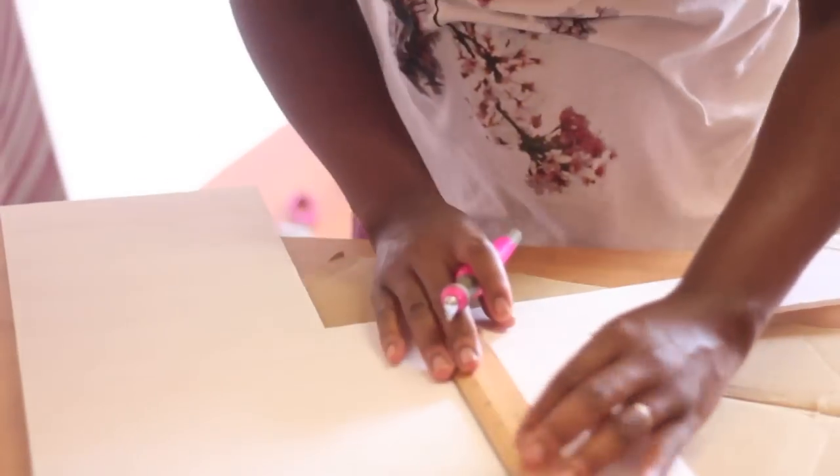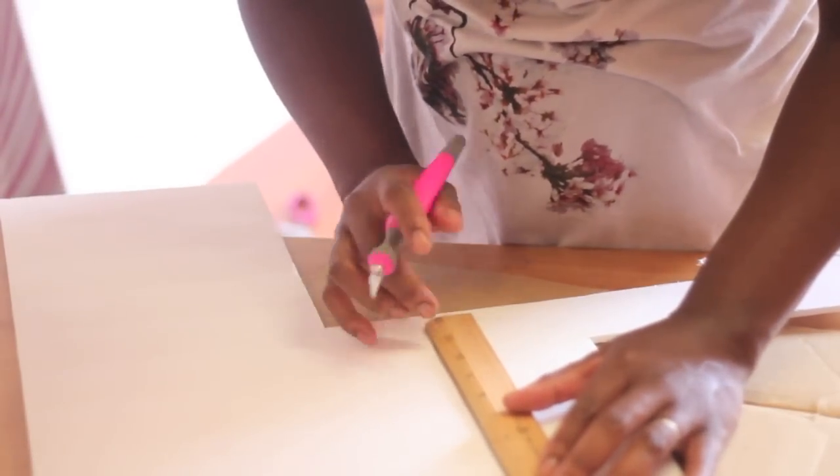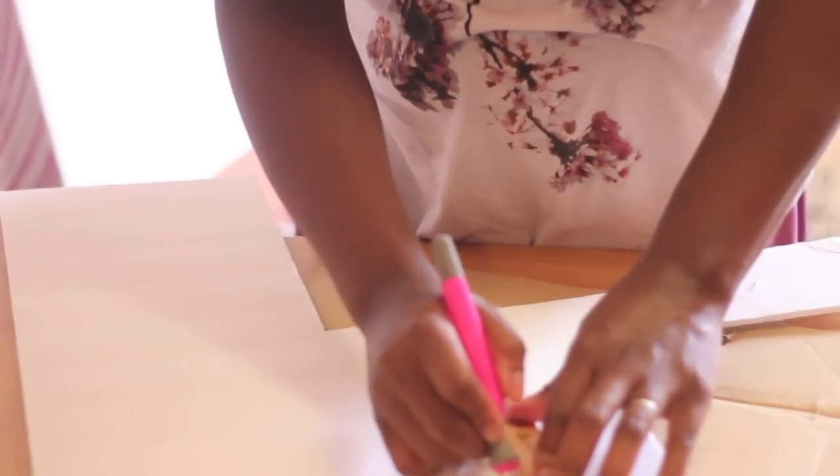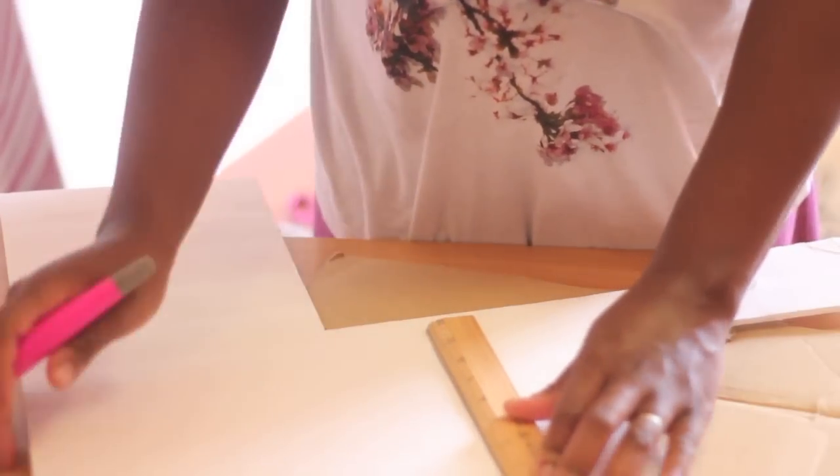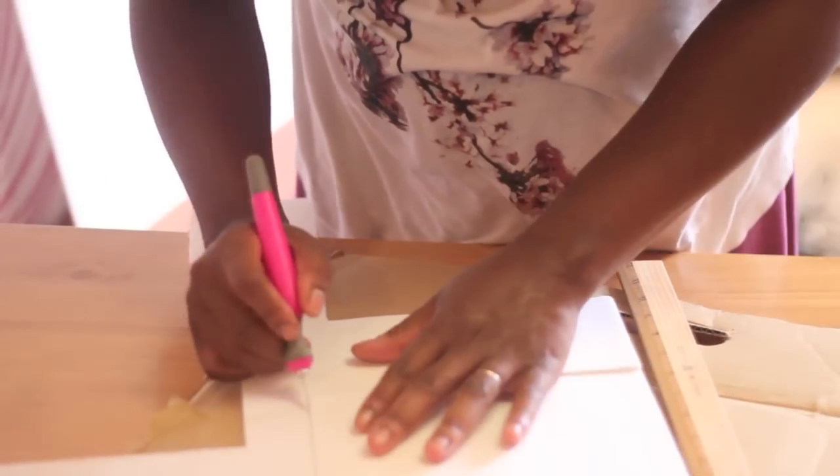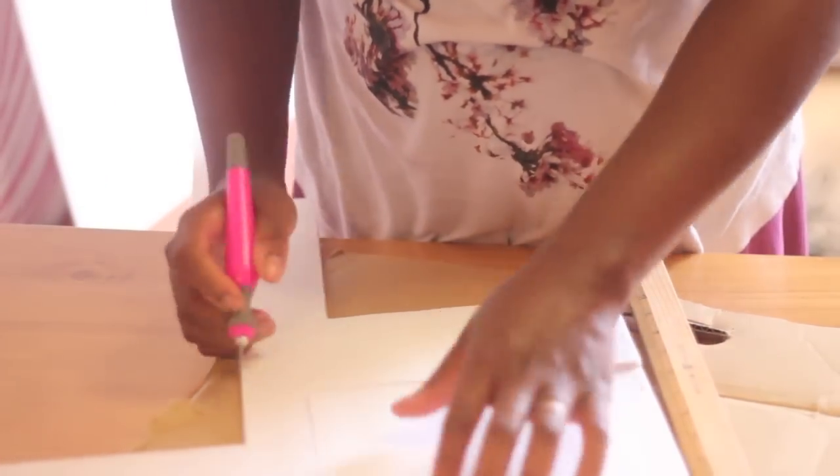Once you have that cutting mat or protective surface out, you're going to take your exacto knife and ruler and cut along the drawn lines. It's worth mentioning that if you are not using a metal ruler, make sure your plastic or wooden ruler has a metal edge so that your exacto knife doesn't cut into the plastic or wooden ruler material.